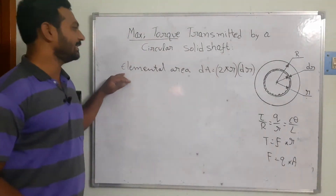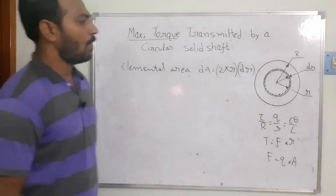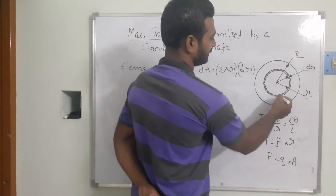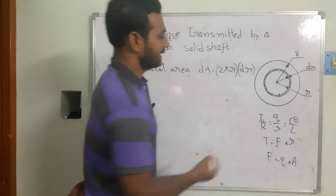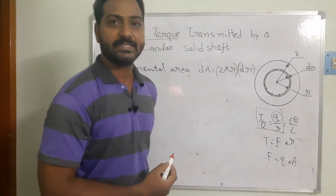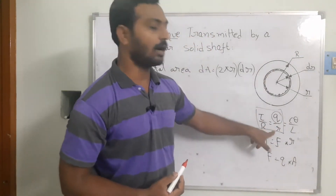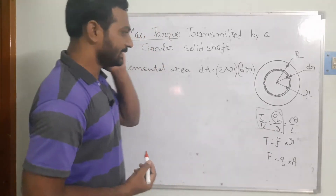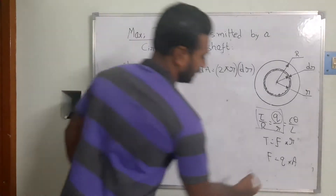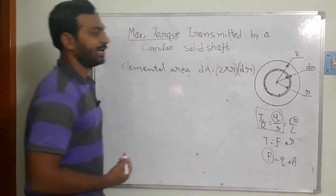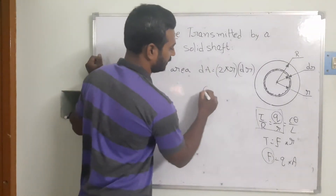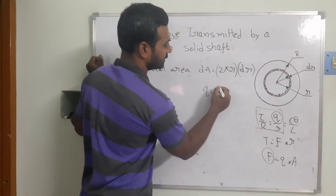Once we calculate the elemental area, we also need to find out the stress existing on this member. The shear stress q is the shear stress existing on the elemental strip at a location r. I want to find out the turning force existing on this element.